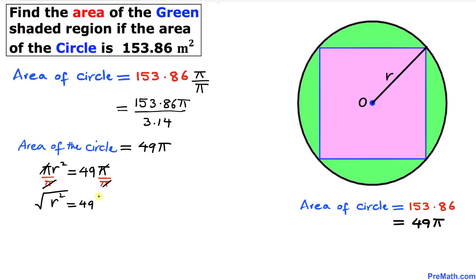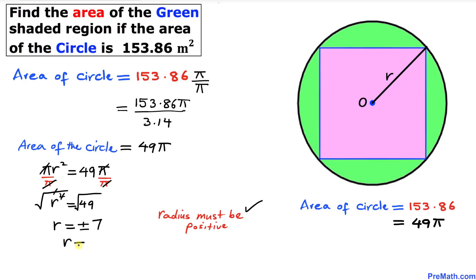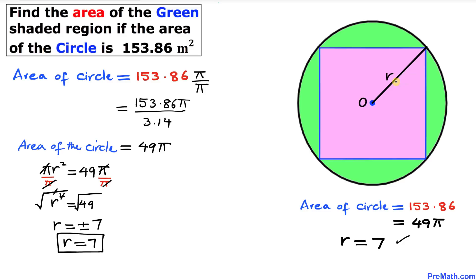Taking the square root of both sides to undo the square, r equals positive or negative 7. Since r is the radius and represents a length, it must be positive, so r equals positive 7. The radius is 7 meters, and therefore the diameter is 7 plus 7, which is 14 meters.